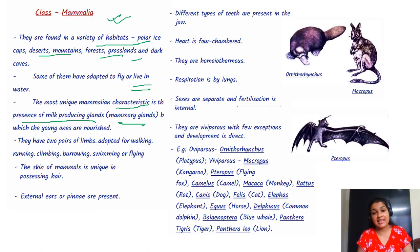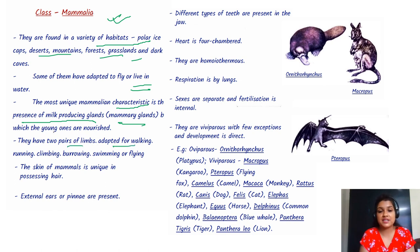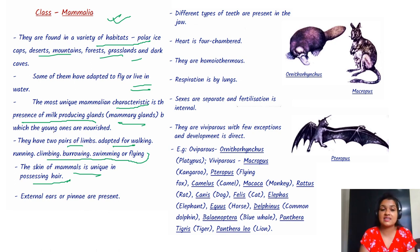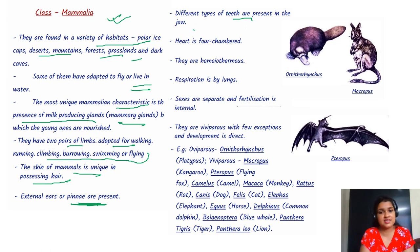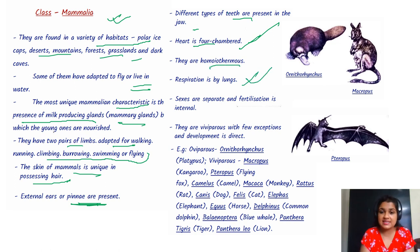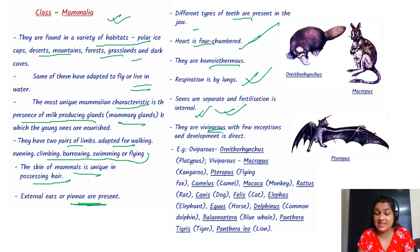Mammals have two pairs of limbs adapted for walking, running, climbing, swimming, or flying. The skin is unique in possessing hair instead of scales. External ears or pinnae are present. Different types of teeth are present in the jaw. The heart is completely four-chambered. They are homeothermal or warm-blooded. Respiration is by lungs. Sexes are separate, fertilization is internal, and they are mostly viviparous — giving birth to live young rather than laying eggs.